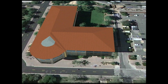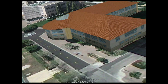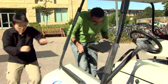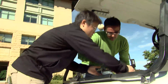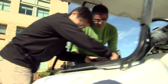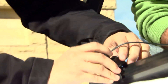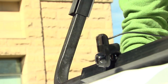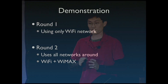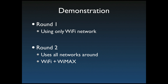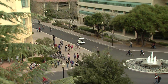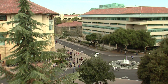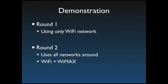This is where we're going to start the experiment. For today's experiment, we'll be streaming a video from a camera mounted in front of a golf cart, using the wireless network that we have just described. We're going to drive around the CS building on the golf cart. On the first round, we'll stream the video only using Wi-Fi networks — probably the same that you have in your network today. On the second round, we're going to use all the networks around us: Wi-Fi and WiMAX.